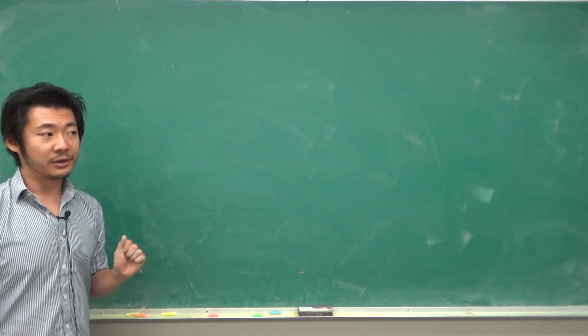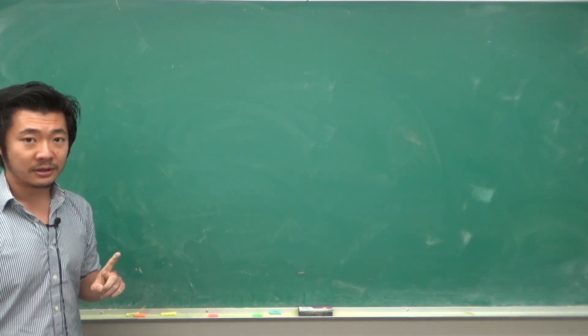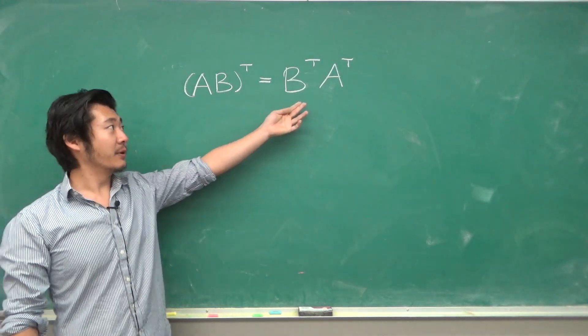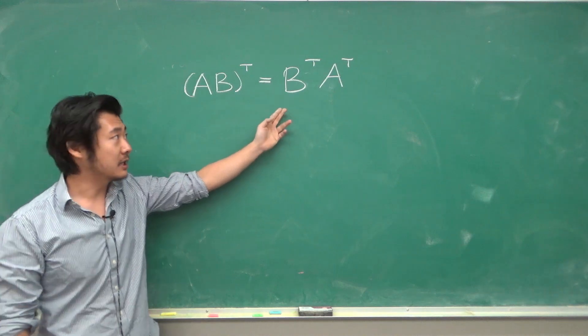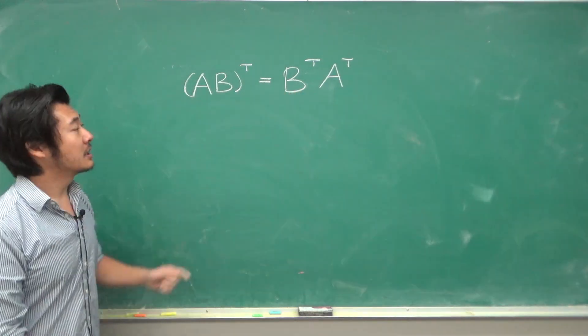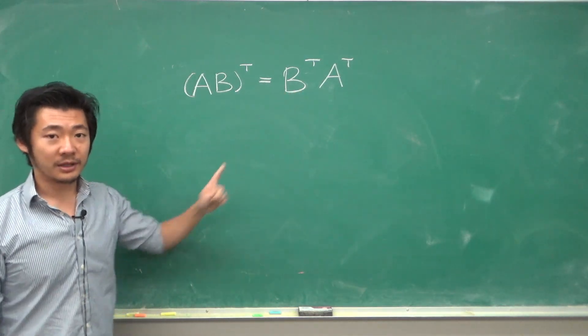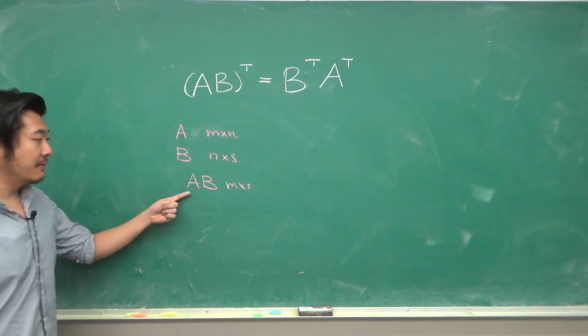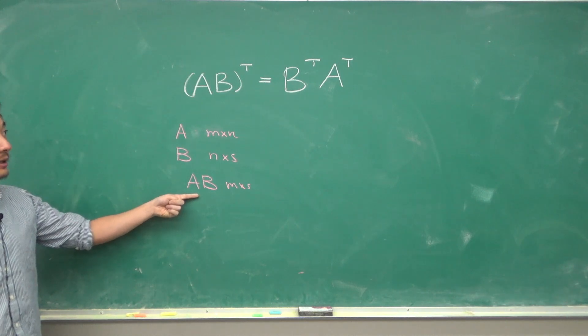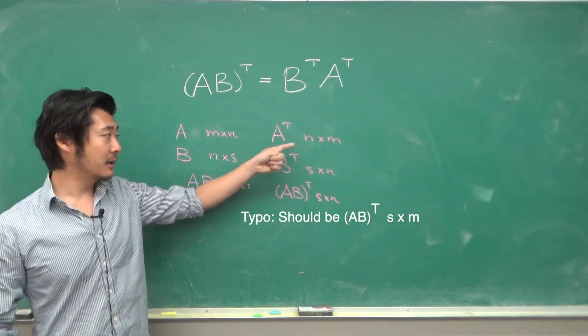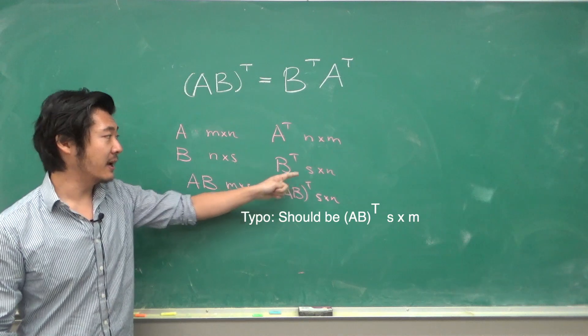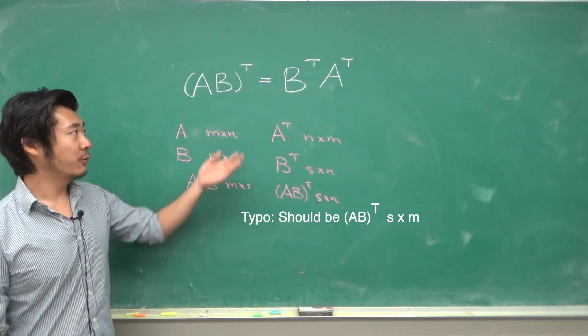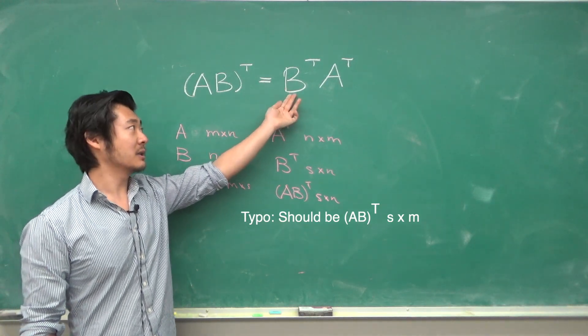There's a couple of properties of transpose, but the one that is important to note is that (AB) transpose is B transpose A transpose, not A transpose times B transpose. Something like this must happen because if A is an m by n and B is an n by s, then AB is an m by s matrix. But A transpose is n by m, B transpose is s by n, so A transpose times B transpose won't make sense. But if we flip it so that it's B transpose A transpose, then at least the dimensions match up.